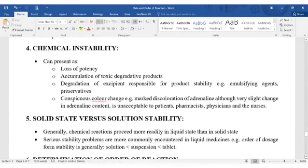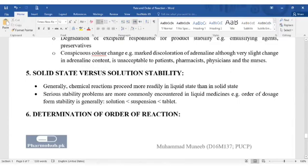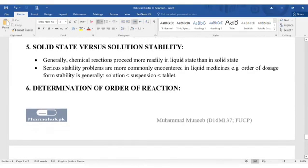Then chemical instability. We can find through reaction kinetics the accumulation of toxic degradative products, degradation of excipients that are responsible for product stability, like emulsifying agents, in different dosage forms. Next is solid stability. So generally, chemical reactions proceed more rapidly in liquid state than in solid state. So stability we can find through reaction kinetics. Then determination of order of reaction.